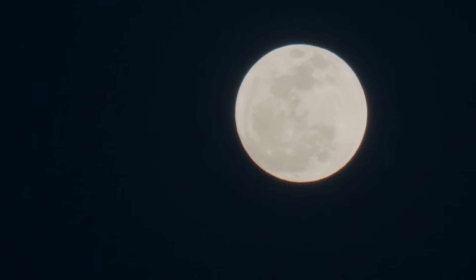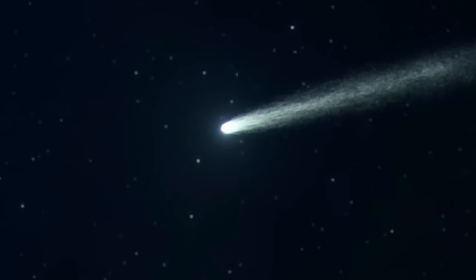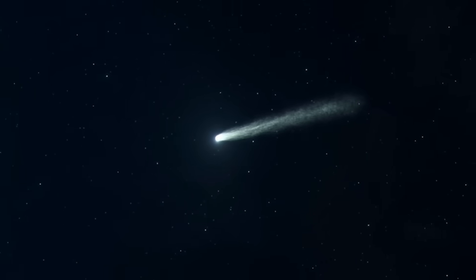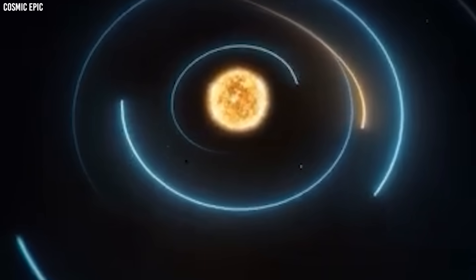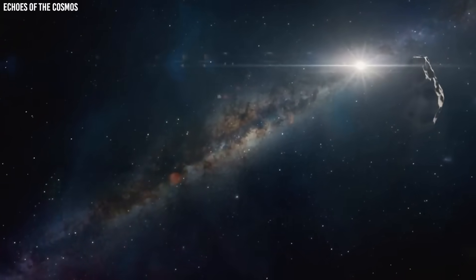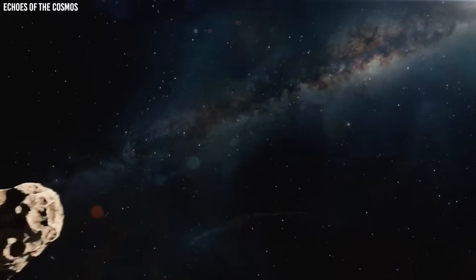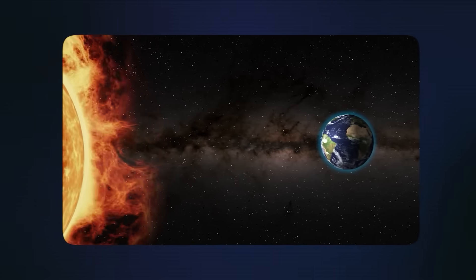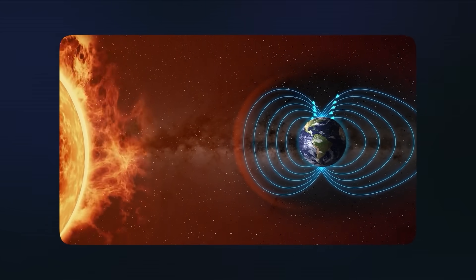The physical processes creating this spectacular display are happening on an enormous scale. The comet's nucleus, which might only be a few miles across, is heating up as it approaches the Sun and releasing thousands of tons of material every day. This material forms the coma, a temporary atmosphere around the comet that can grow to be larger than some planets. The tail forms when solar radiation pressure and the solar wind push this material away from the comet, creating streamers that can extend for millions of miles into space.